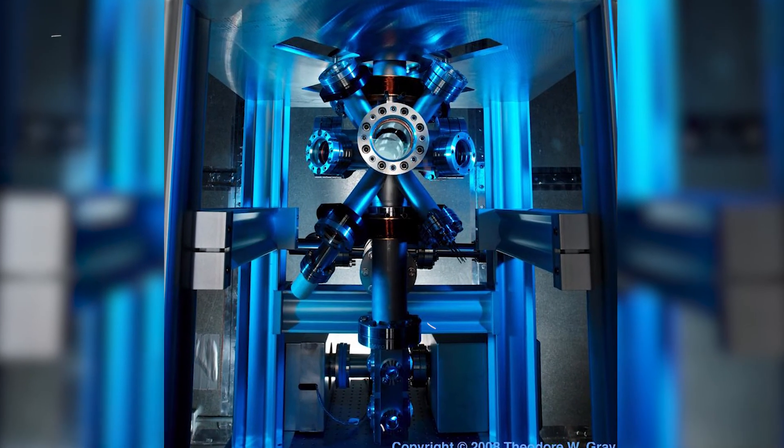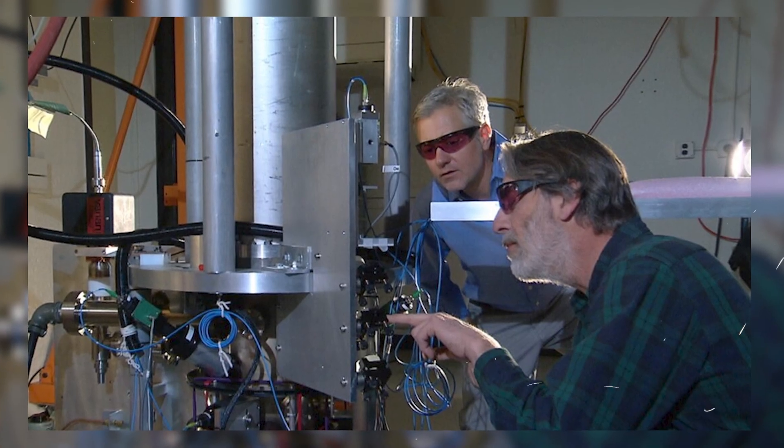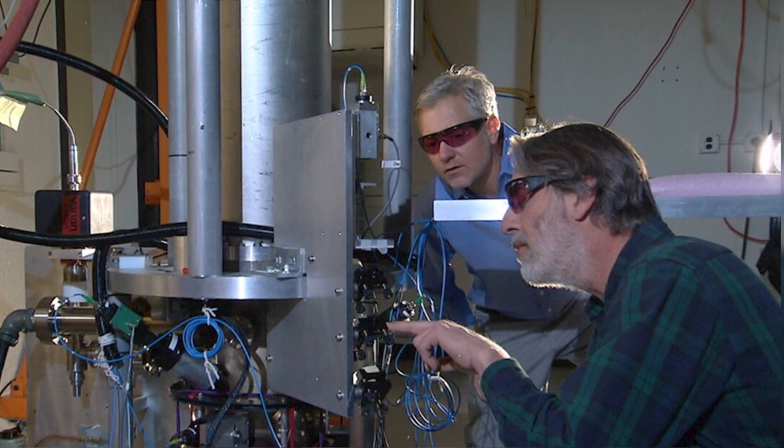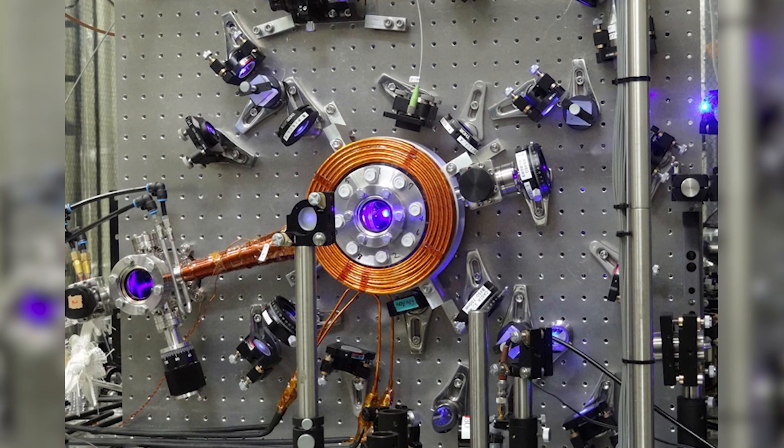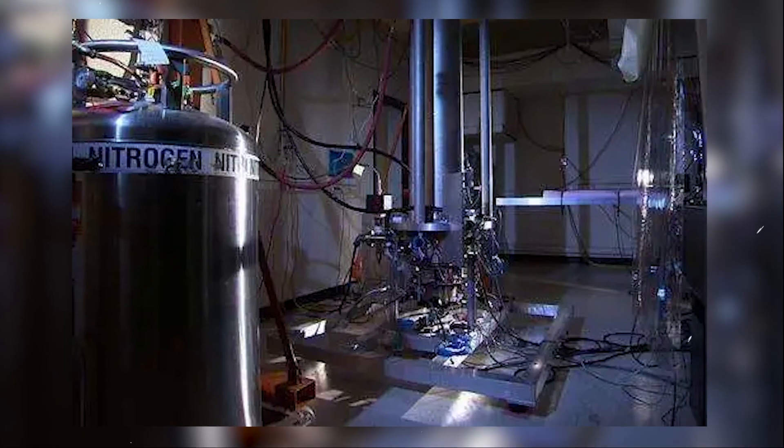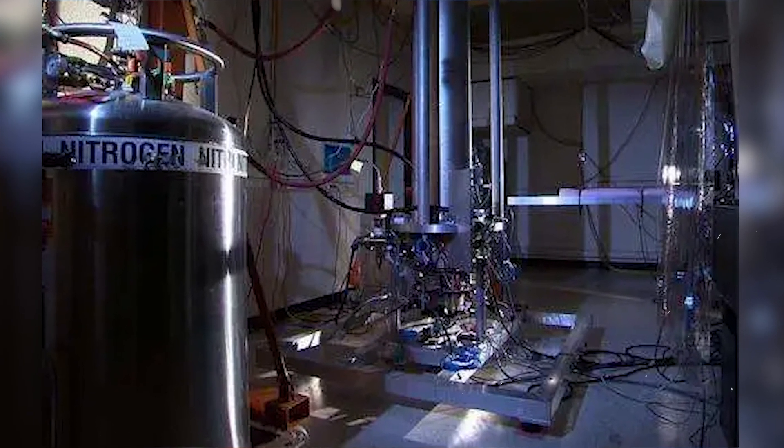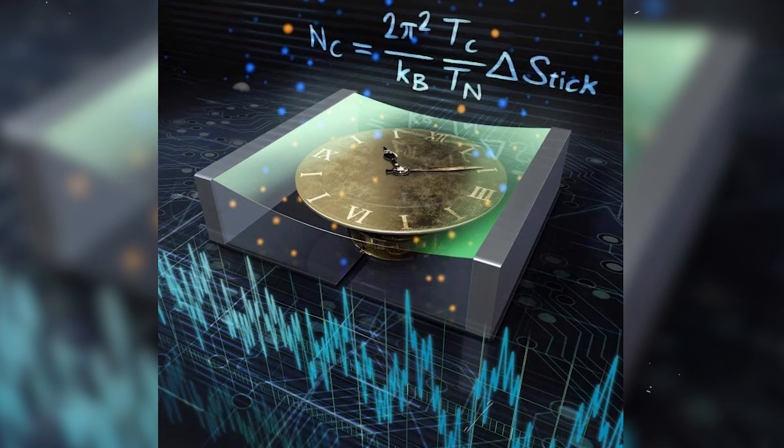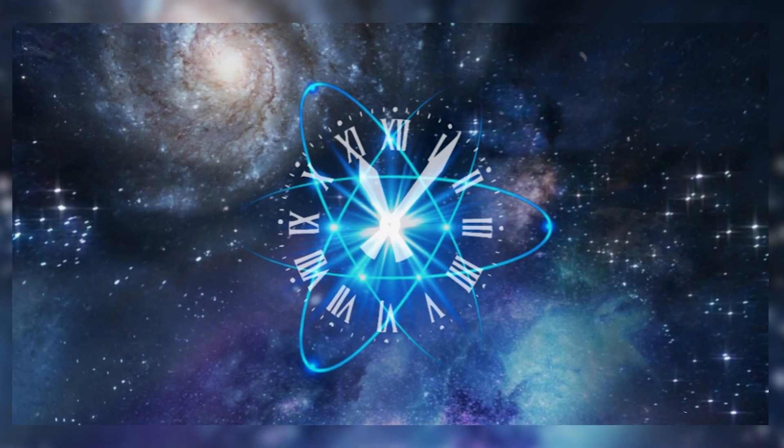Did you know one of the most famous atomic clocks is the NIST-F1? The NIST-F1 uses cesium-133 atoms to measure time with extraordinary precision. The clock operates by exposing the atoms to microwaves and measuring the frequency of the radiation they emit.